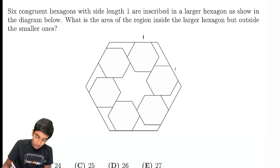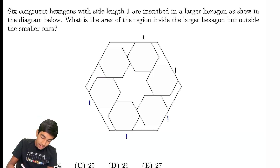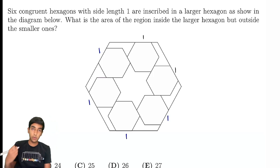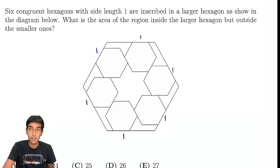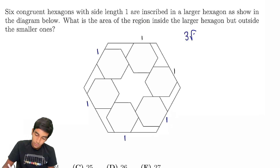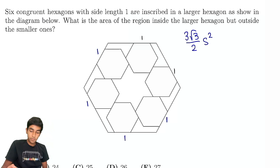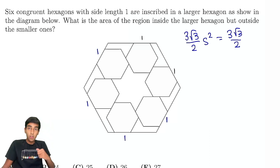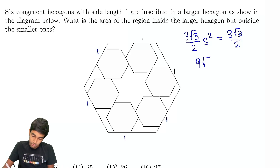Because each of these hexagons has a side length of 1, we can easily find the area of each of the six hexagons. We divide into six equilateral triangles, each with area (√3/4) × side². So the overall area formula for a hexagon is (3√3/2) × s². The area of each smaller hexagon is 3√3/2 since s = 1, and with six of them, the total area is 9√3.